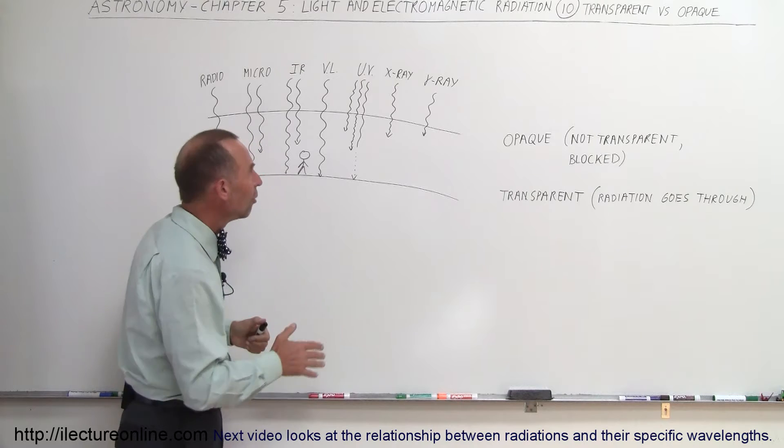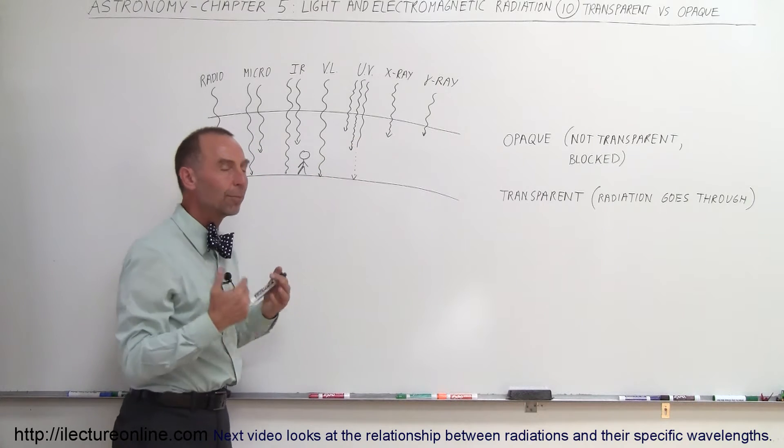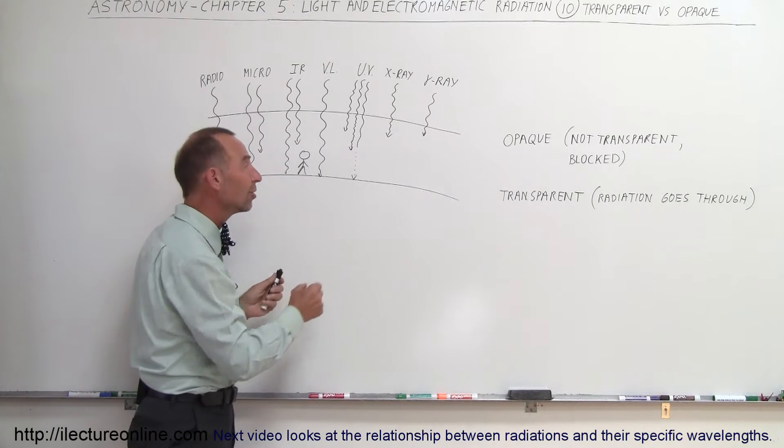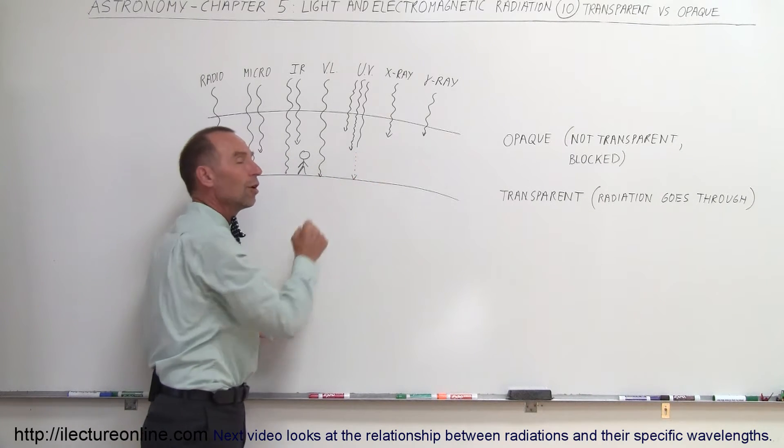For UV radiation, most of the radiation is blocked. So we can probably say that the atmosphere is opaque for UV radiation, if only a small smidgen of it makes it through.